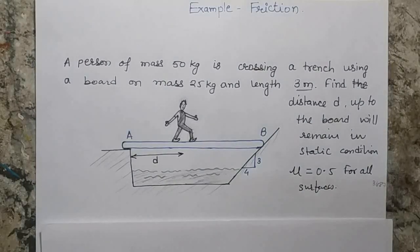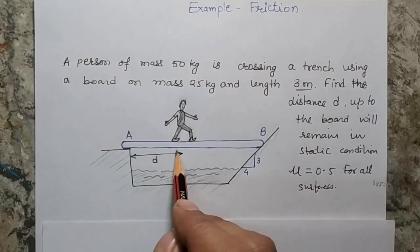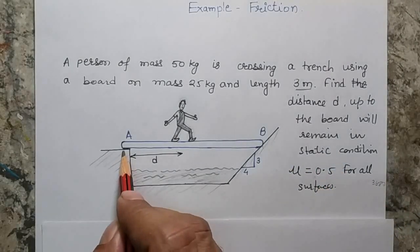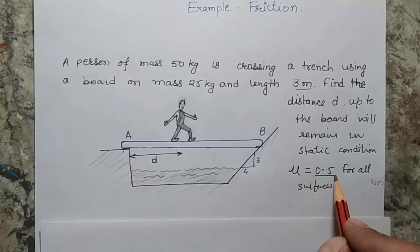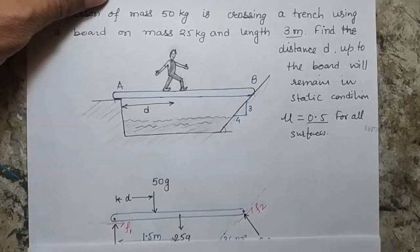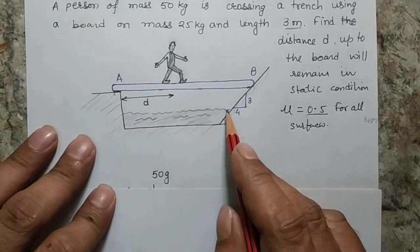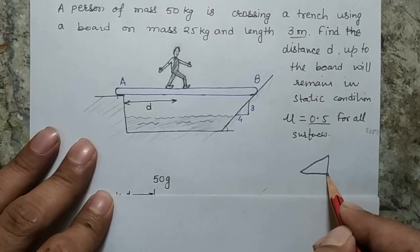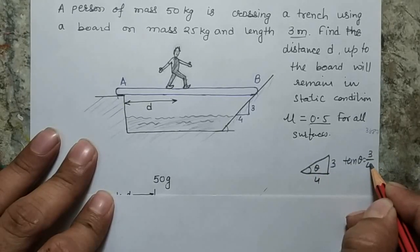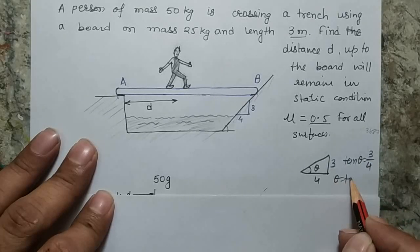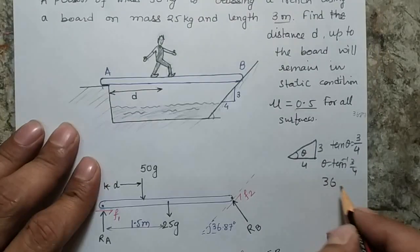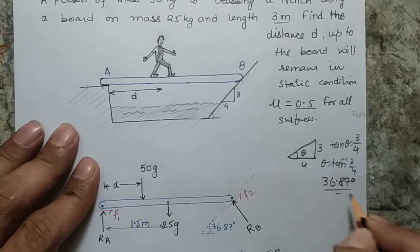The question is: up to what distance can the person move safely so that the board remains in equilibrium? The coefficient of friction is given as 0.5. Instead of giving the angle directly, the slope is given as 3:4. Using this triangle where the opposite side is 3 and the adjacent side is 4, tan θ = 3/4, which gives θ = tan⁻¹(3/4) = 36.87 degrees.